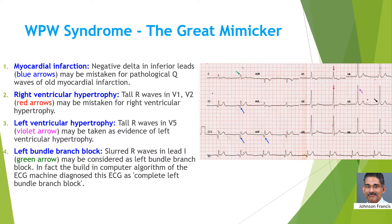But these mistakes can be avoided if we go by the sequence of ECG evaluation: P waves and PR interval. It is because we forget to see the P waves and PR interval that WPW syndrome is often missed. Once you see a short PR interval, naturally we look at the delta waves.